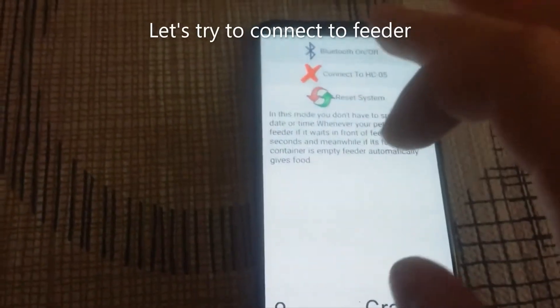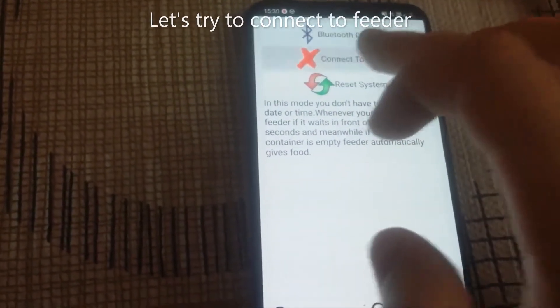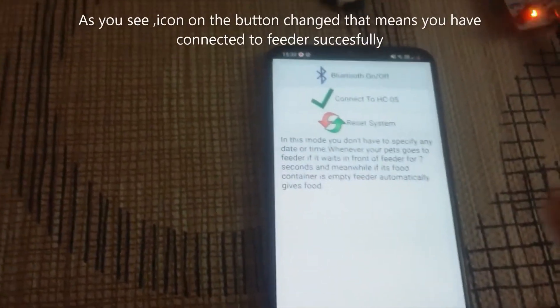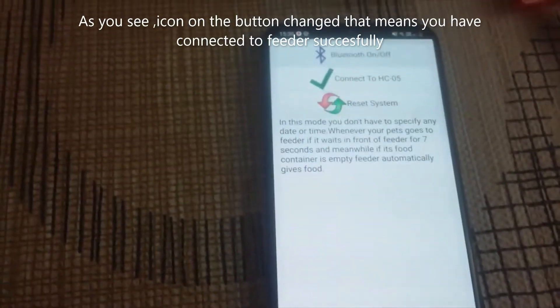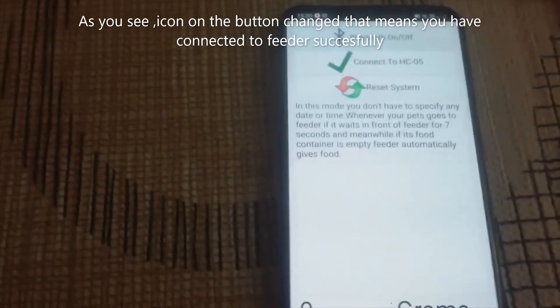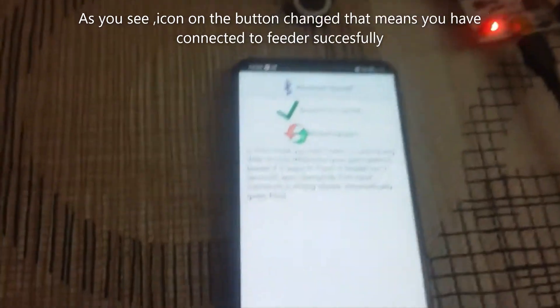Now let's try to connect to the feeder. As you see, the icon on the button changed, that means it connected to the feeder successfully.